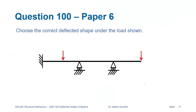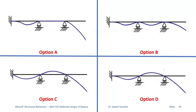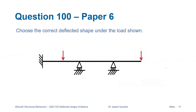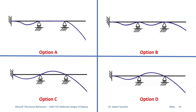In this question, we have to draw the correct deflected shape. We have to choose from four options. I suggest that you solve the problem first before looking at the solution. We have loading applied at the end and we have loading applied at the left span.